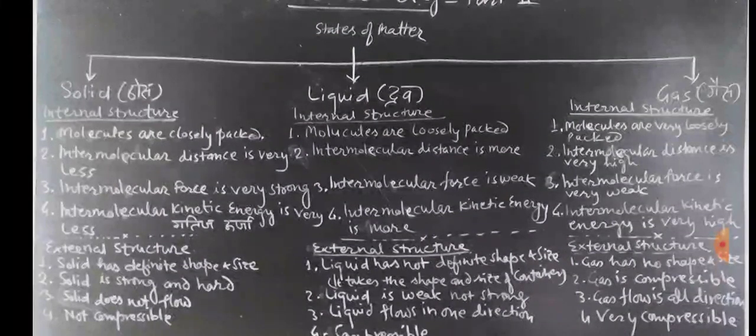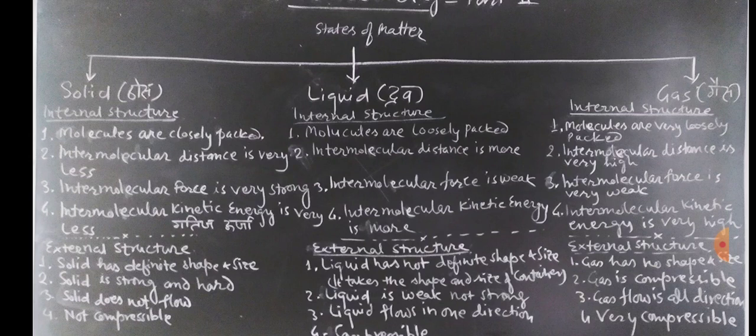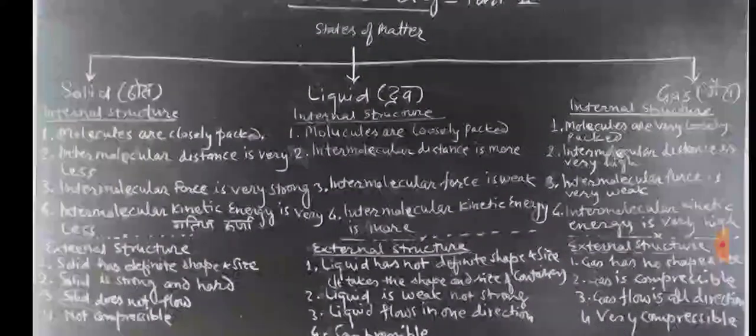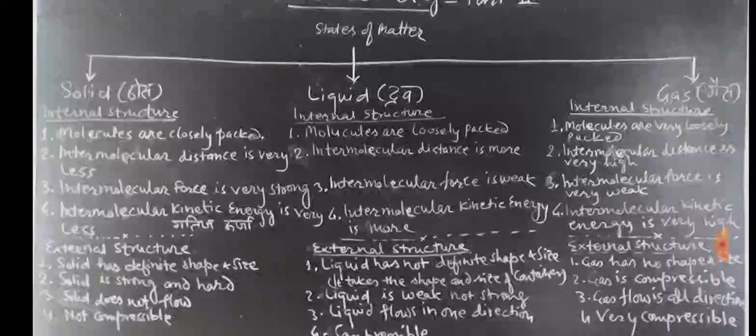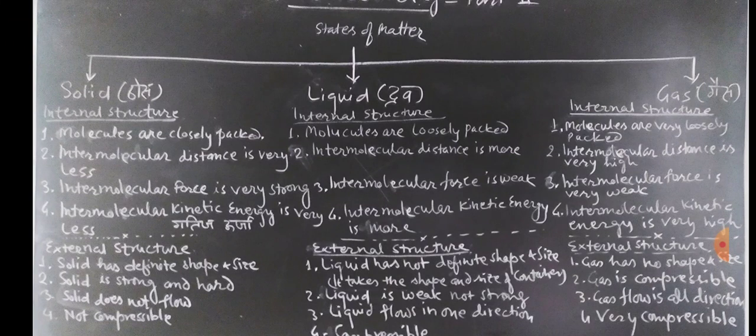Second is the liquid. Internal structure of liquid: the molecules of the liquid are loosely packed. That's why the intermolecular distance is more, the intermolecular distance between them is much more. That's why the liquids can flow.